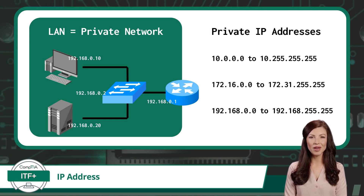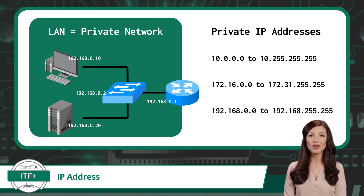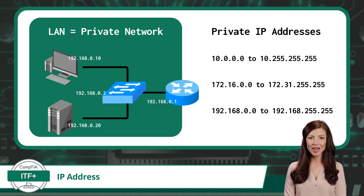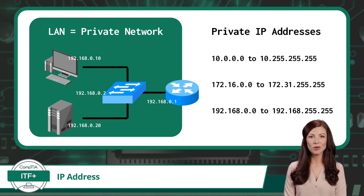Now let's talk about private and public IPv4 addresses. Private IPv4 addresses are used within local networks, such as your home or office. They are not routable on the internet and are meant for internal communications — such as between a workstation and a printer, or for an internal corporate web server known as an intranet. These addresses fall within specific reserved ranges, displayed on screen. Any IPv4 address within these ranges is considered a private IPv4 address, restricted to use within a LAN or private network.